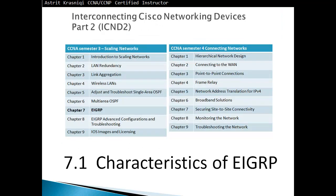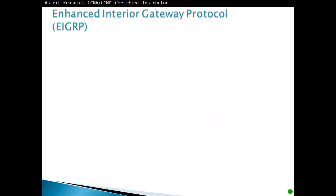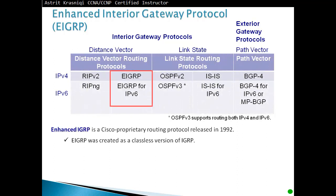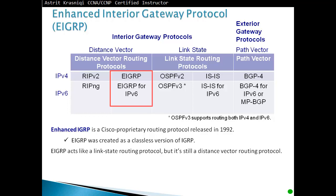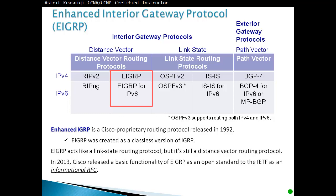Section 7.1 Characteristics of EIGRP - Enhanced Interior Gateway Protocol. EIGRP is a distance vector routing protocol and a Cisco proprietary routing protocol, released in 1992. EIGRP was created as a classless version of IGRP, which was classful. EIGRP will act like a link-state routing protocol, but it's still considered an advanced distance vector routing protocol. In 2013, Cisco released basic functionality of EIGRP as an open standard to the IETF as an informational RFC, though Cisco continues to maintain control of EIGRP.